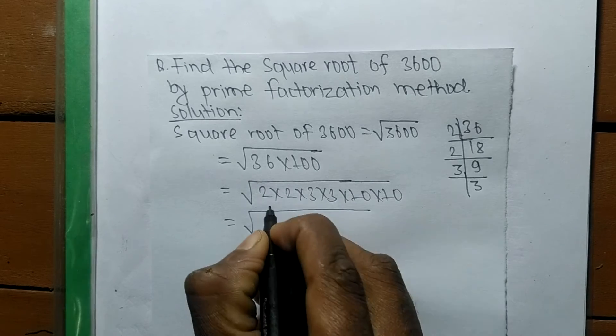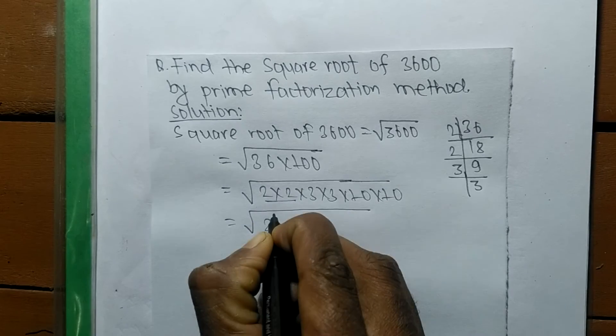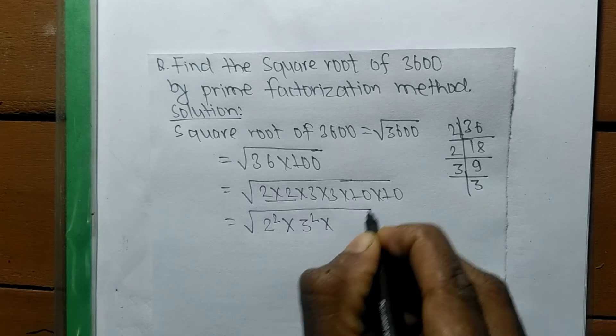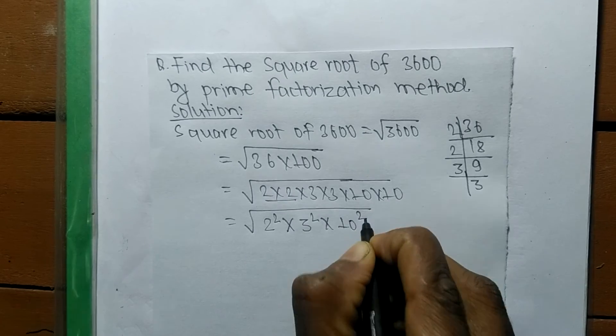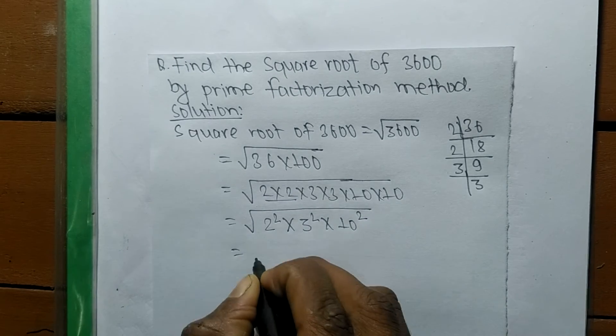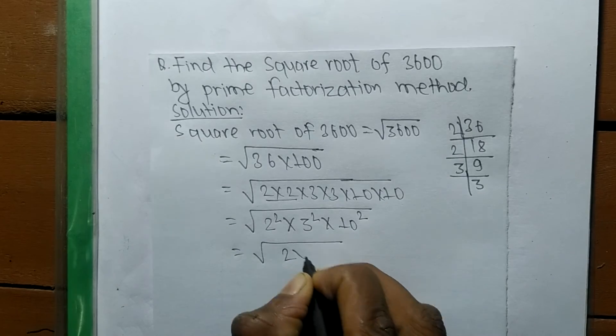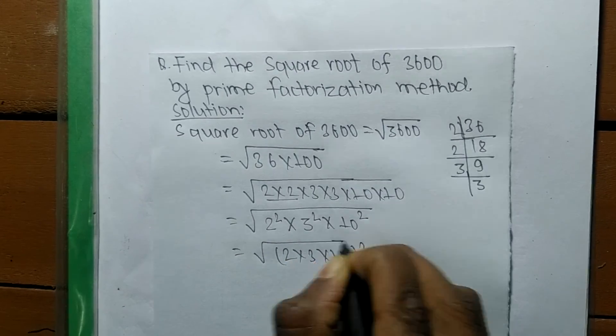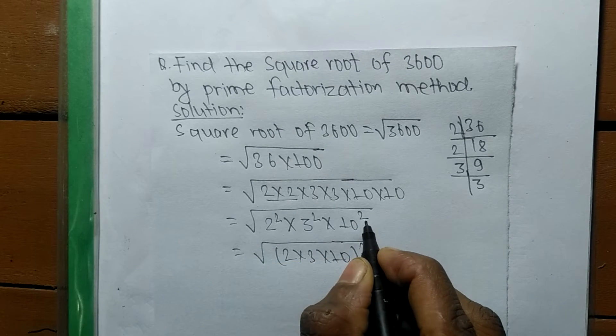2 into 2 means it is 2 squared. 3 into 3 is 3 squared, and 10 into 10 is 10 squared. So it is 2 into 3 into 10 whole squared.